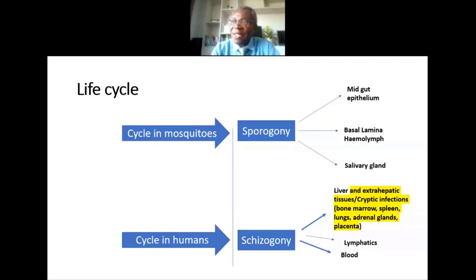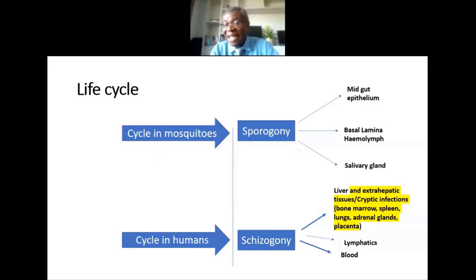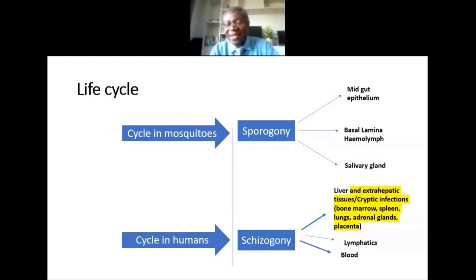In elimination, you detect what you find in the blood and treat. However, cryptic infections in the bone marrow, spleen, lungs, adrenal glands, and placenta are not easily detectable, because accessing them would require invasive procedures. For routine activities, you cannot enter the liver, spleen, or bone marrow to assess — so these sites are unavailable for detection, and because they are unavailable, they serve as reservoirs that sustain infection.